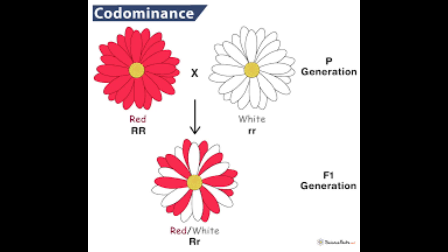The best way to illustrate the difference between co-dominance and incomplete dominance is to look at flowers. In the co-dominant case, if we breed a red flower to a white flower, we end up with a flower that is both red and white. Neither gene is dominating the other — they are co-dominant — and we get a flower that exhibits red characteristics over half the flower and white characteristics over the other half.